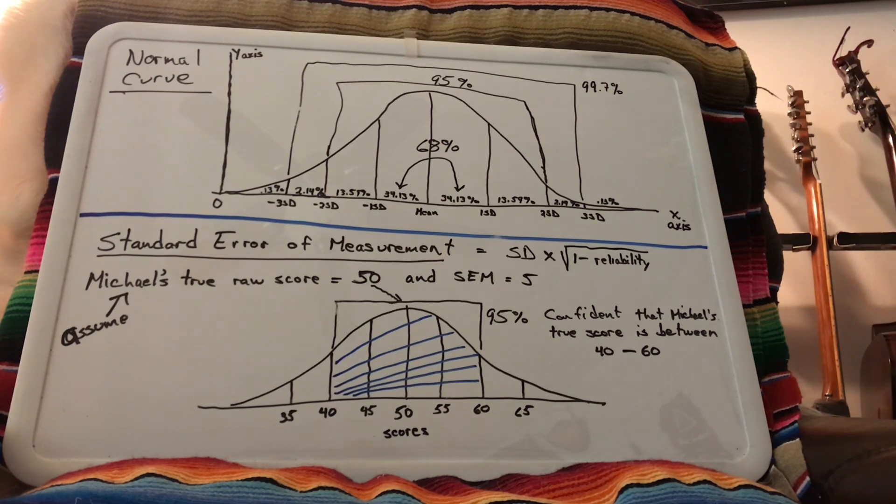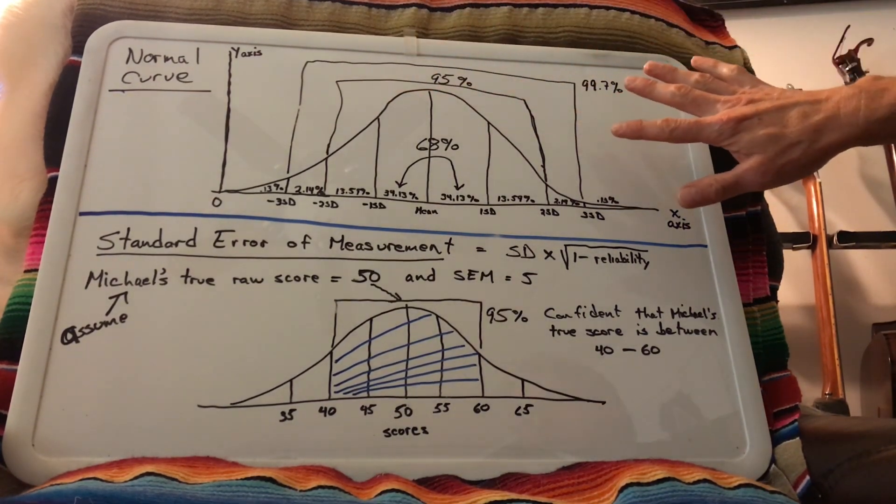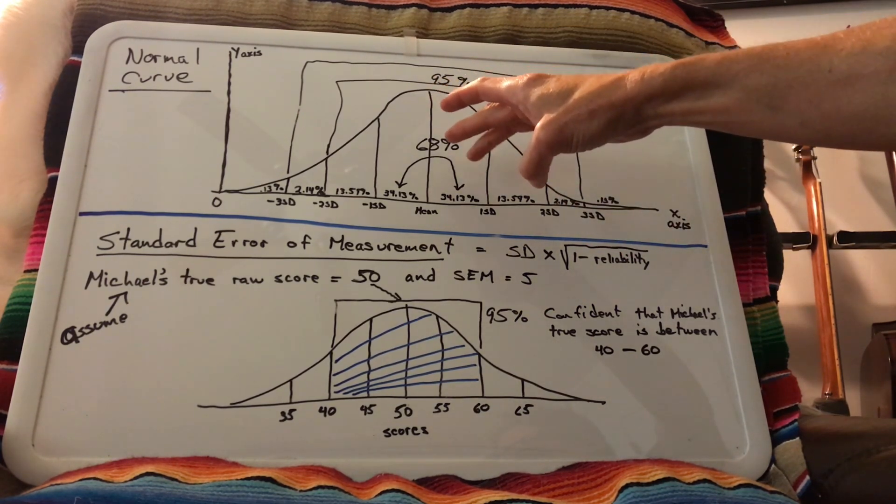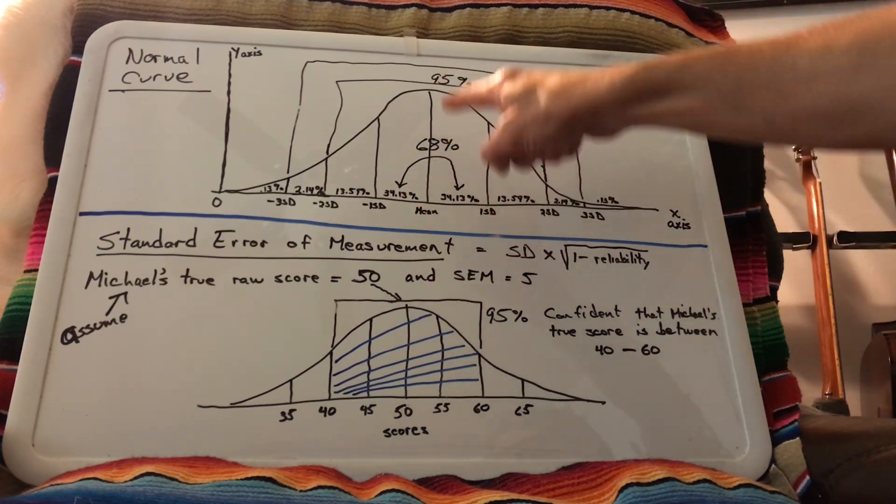Now I'm going to jump in the screen just to show you some of this. So we know with the normal curve, if we were to get a large sample of people's height, that 68% of people would fall plus or minus one standard deviation from the mean, from the average height.